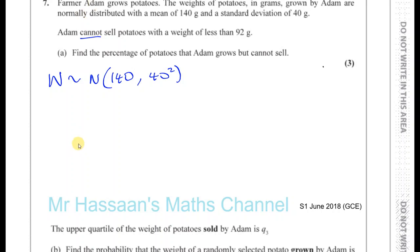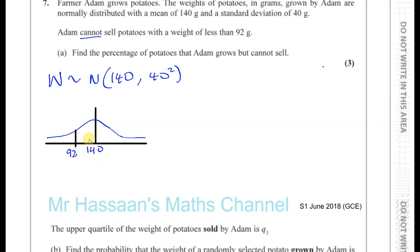So we have our normal distribution. He grows potatoes with a mean of 140 and a standard deviation of 40, but he cannot sell potatoes which are less than 92. So 140 is the mean, that's going to be here, and 92 is going to be over here — less than 140. So he cannot sell this proportion of potatoes. What we need to do is standardize this so that the mean is zero, according to how many standard deviations below the mean 92 is.